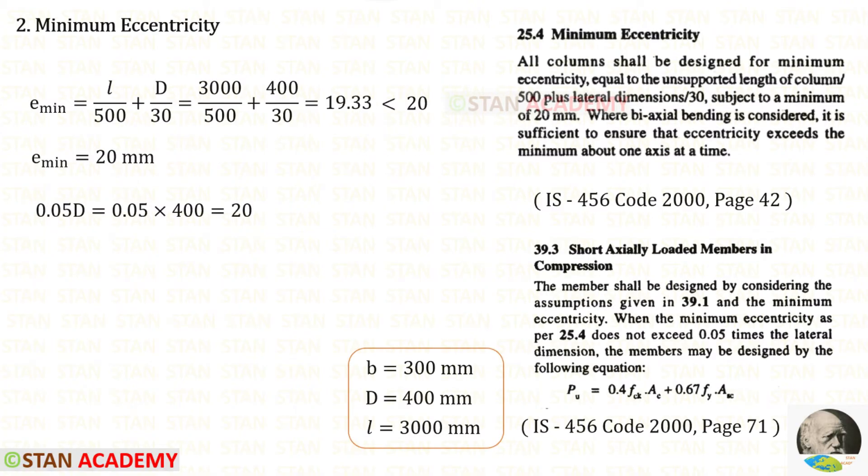Now let us check the minimum eccentricity. We can check only in the major axis because the major axis is only subjected to the load and moment. For L upon 500 plus D upon 30, we will get 19.33 which is less than 20. We have to select the maximum value which is 20. For 0.05D also, we will get 20. Since both are same, we can neglect the eccentricity.